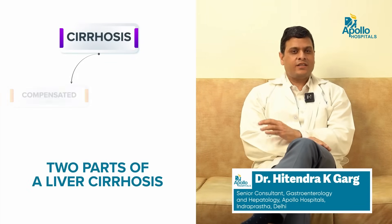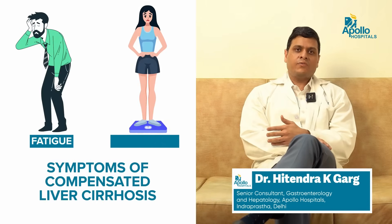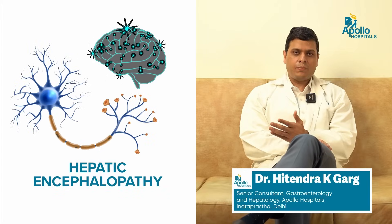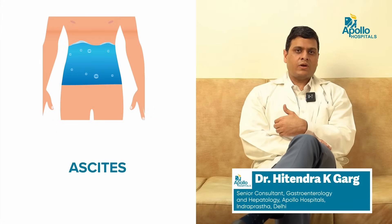By and large, cirrhosis of the liver is divided into two parts: compensated and decompensated. Compensated means there is cirrhosis but no symptoms — 60 to 70 percent of these patients are asymptomatic, with the most common symptoms being fatigue and weight loss. Decompensated cirrhosis involves development of jaundice, coagulopathy, hepatic encephalopathy, liver tumor, ascites, and pleural effusion.